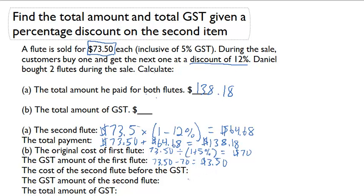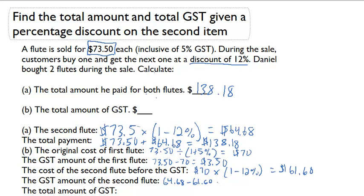Now let's figure out the cost of the second flute before GST. We're going to do $70 times 1 minus 12% for the 12% discount, and that's going to equal $61.60. Now we'll figure out the GST amount for the second flute, and that's going to be $64.68 minus $61.60, which gives us $2.88.